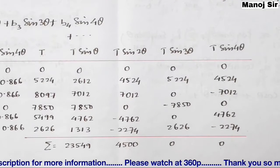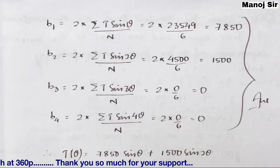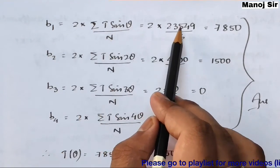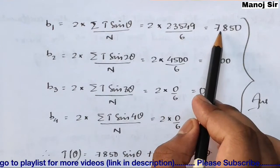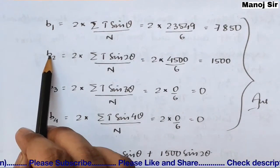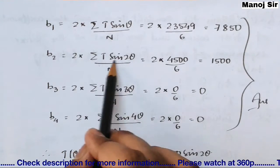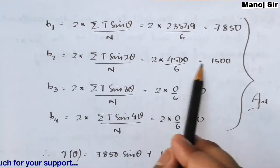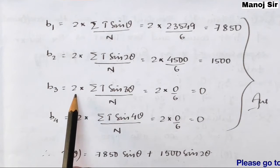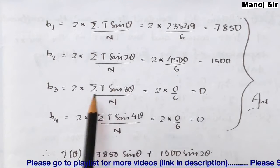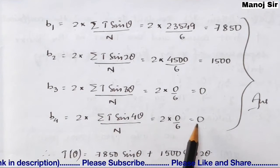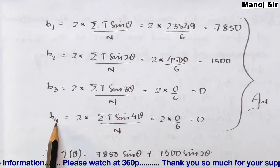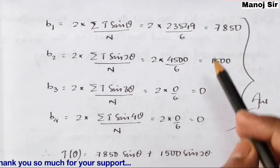Now for the most important part: b1, b2, b3, and b4. b1 = (2 × Σ(T sin θ)) / N = (2 × 23549) / 6, giving b1 = 7849.50 (approximately 7850). b2 = (2 × Σ(T sin 2θ)) / N = (2 × 4500) / 6 = 1500. b3 = (2 × Σ(T sin 3θ)) / N = (2 × 0) / 6 = 0. Similarly, b4 = (2 × Σ(T sin 4θ)) / N = (2 × 0) / 6 = 0.